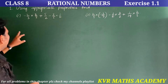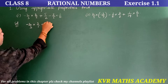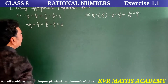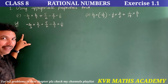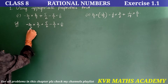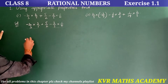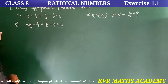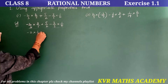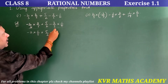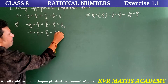Let us do them one by one. First one solution: take minus 2 by 3 into 3 by 5, plus 5 by 2, minus 3 by 5 into 1 by 6. According to BODMAS rule, we find these values. Here, in numerator 3 and denominator 3 will be cancelled. So this becomes minus 2 into 1 by 5. Next, plus 5 by 2, minus — in numerator 3 and denominator 6, these cancel to give 1 by 2. So we get minus 1 by 5 into 1 by 2.